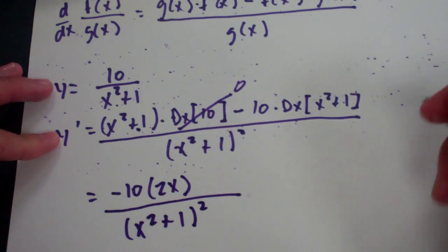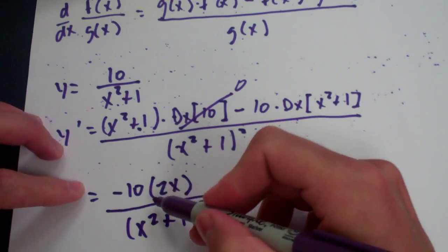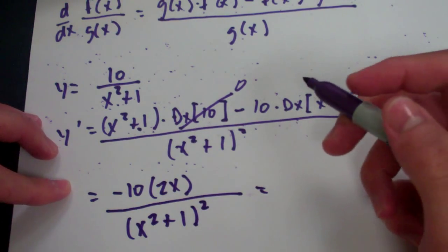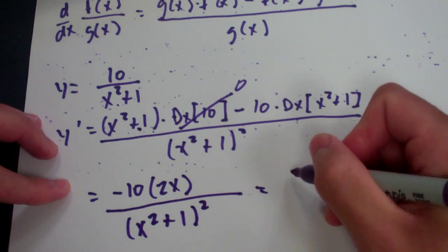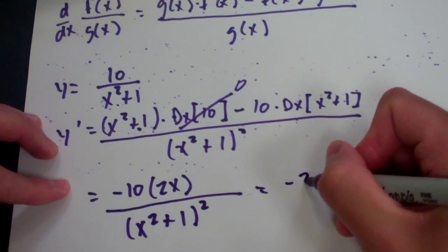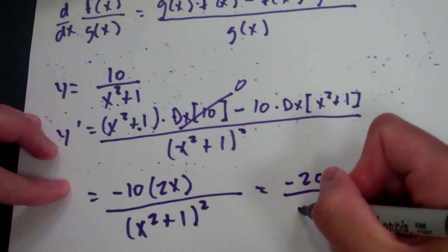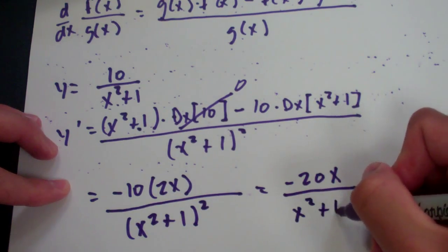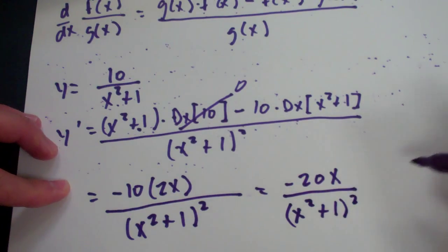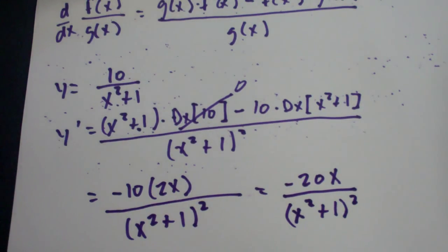Can't even see that, huh? Okay. Now, I'm going to go ahead and multiply this out. We don't have to because there's really nothing we can do with that at this point. So, we have negative 20x all over x squared plus 1 squared. So, that's our answer.